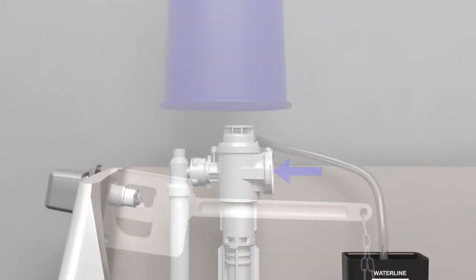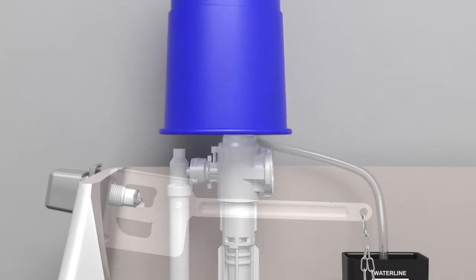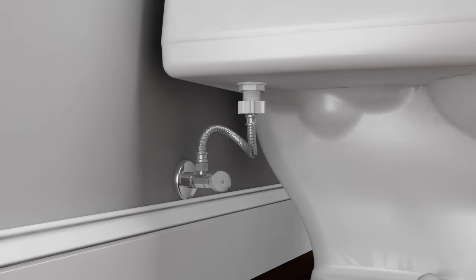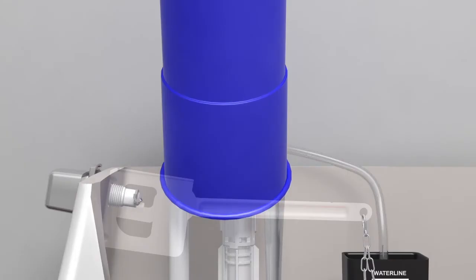Cover the valve opening with a plastic cup so the water flow will be directed into the tank. Turn on the water supply. Let the water run for 10 to 15 seconds to clear any debris from the valve.